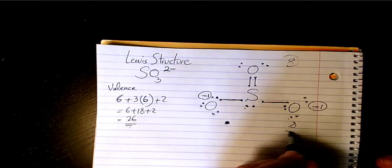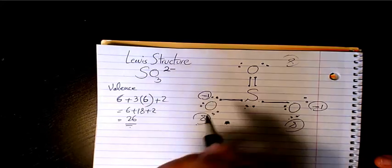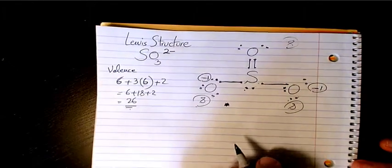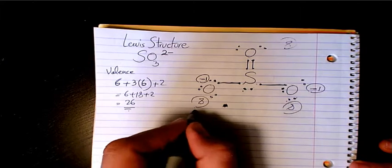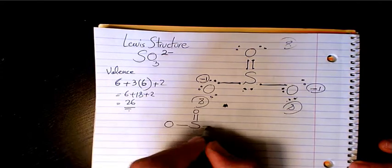So now we have octet rule here, octet rule here, and this one sulfur is overfilling. So basically what we have: we have a double bond and single bond and the lone pair here.